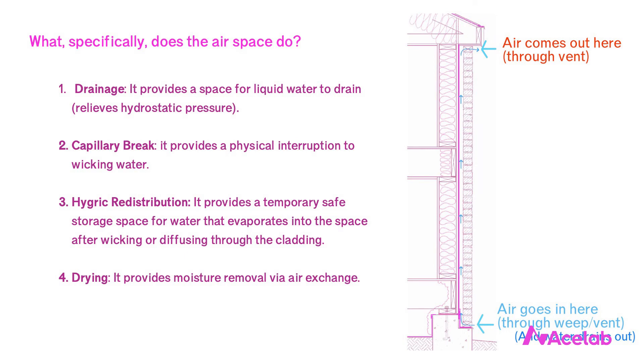So why does the building code require more space than that? The code tells us to include at least a 1-inch space behind masonry claddings and a 3/16-inch space behind stucco claddings in wet climates — and that's just code minimum. I recommend exceeding code minimum and providing at least a quarter-inch space behind stucco and adhered stone claddings for clients building in wet climates. If we return to our list, the reason we might need a larger space behind our cladding is not because our walls require additional drainage, even in wet climates, but because they require additional drying — and they don't just universally require more drying, they require additional drying to compensate for other design decisions.